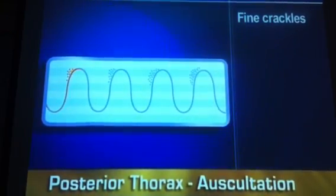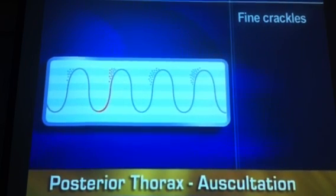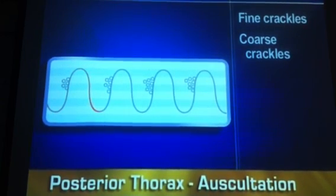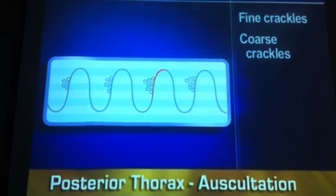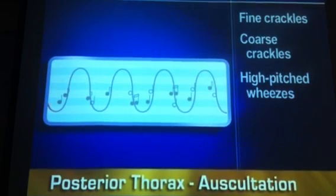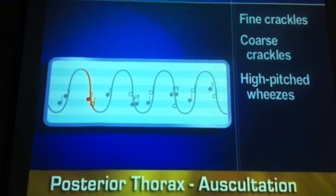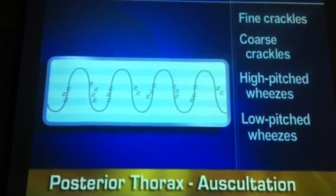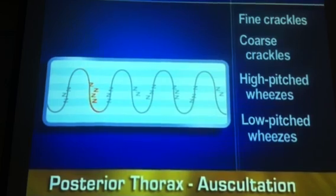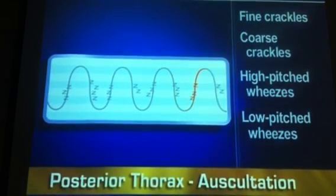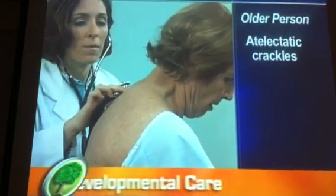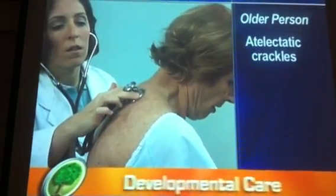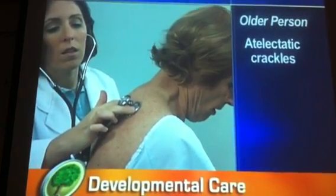You should not hear any adventitious sounds, such as crackles or wheezes. Fine crackles are discontinuous, high-pitched, short crackling sounds on inspiration. Coarse crackles are loud, low-pitched bubbling sounds that start in early inspiration. High-pitched wheezes are musical squeaking sounds, mostly on expiration. Low-pitched wheezes are musical snoring sounds, mostly on expiration. In an older person, you may hear adventitious sounds called atelectatic crackles — short, popping, crackling sounds like fine crackles that do not last beyond a few breaths, and occur only in the periphery.